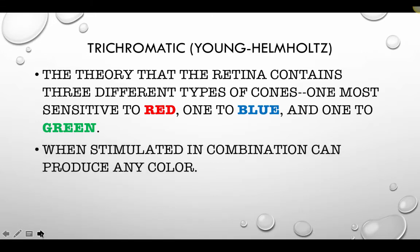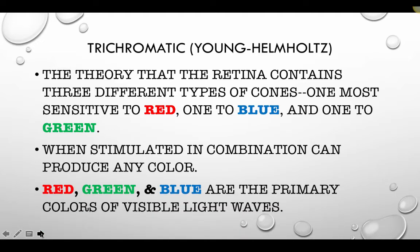When these three color-sensitive cones are stimulated in varying ratios, they can create any color combination the human eye can detect. Some researchers suggest we can perceive over a million different hues or colors on the visual spectrum. So red, green, and blue are the primary colors of visible light rays according to trichromatic theory.